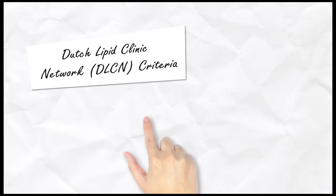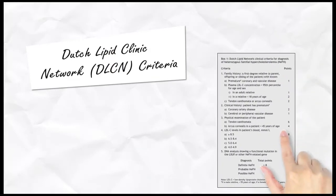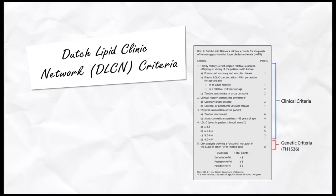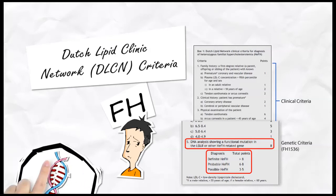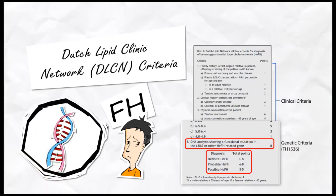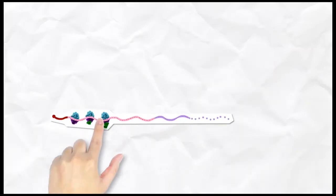The Dutch Lipid Clinic Network criteria defines that DNA analysis on functional mutation is one of the highest contributing factors in the diagnosis of definite FH. A pathogenic mutation contributes to one being diagnosed as definite FH.